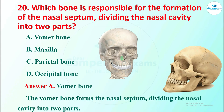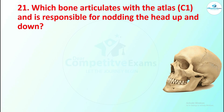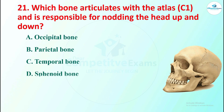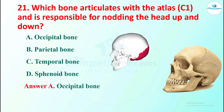Question 21: which bone articulates with the atlas (C1) and is responsible for nodding the head up and down? Options are occipital bone, parietal bone, temporal bone, or sphenoid bone. The right answer is occipital bone, which helps us nod our head up and down.